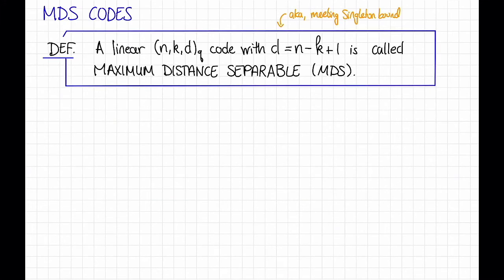A code that exactly meets the singleton bound is called a maximum distance separable code. So what we've just seen is that Reed-Solomon codes are maximum distance separable or MDS.